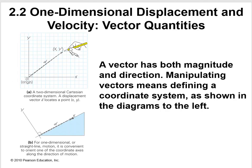One-dimensional displacement and velocity are vector quantities. The vector has both magnitude and direction. Manipulating vectors means defining a coordinate system. So vector has magnitude and direction. Now we're starting to differentiate between a vector and a scalar. We were talking about scalar, now we're talking about vectors, which is also going to lead us into displacement.